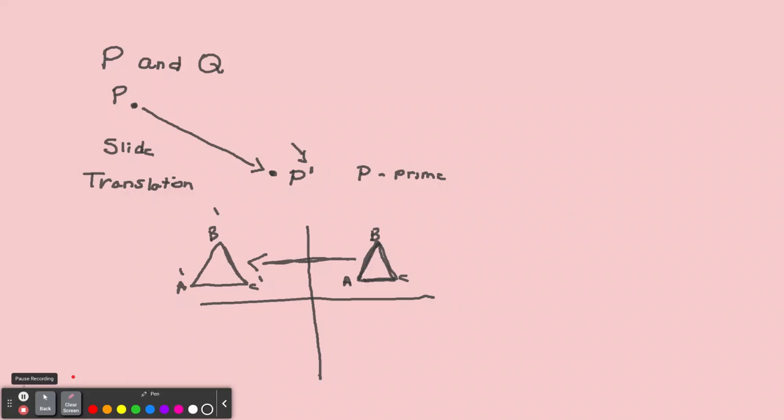So we have the original image, right? This is the original shape, original image. And this is the image, right? So all the vertices, vertex of A and vertex of B and vertex of C, the vertices, we now have A prime, B prime, and C prime to indicate that this is the image. And this would be the original. All right, let's move on.